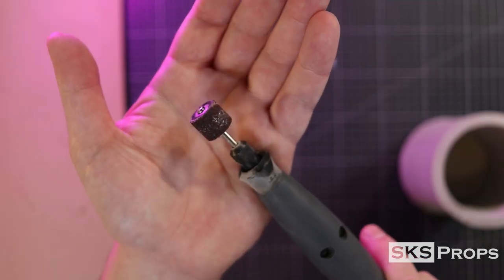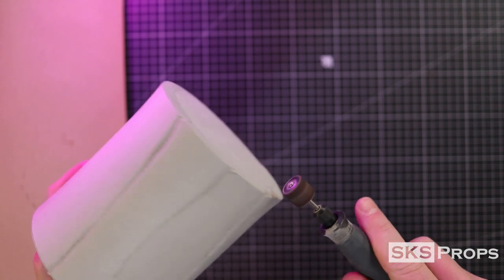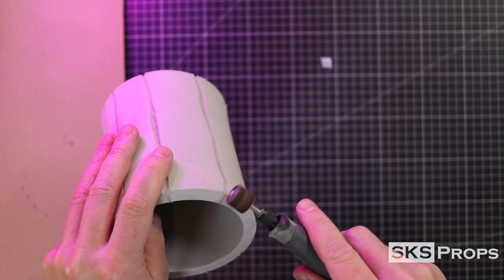Now I can start adding the wood grain texture to the foam, and I do this using a medium grit sanding drum on my Dremel rotary tool. I press pretty hard for my first couple of passes to identify the individual boards.